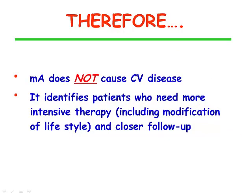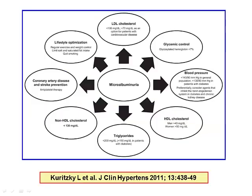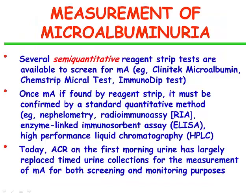Microalbuminuria does not cause cardiovascular disease; it just identifies patients who need more intensive therapy, including modification of lifestyle and closer follow-up. How can microalbuminuria be identified and measured? There are several semi-quantitative reagent strip tests, but once identified, microalbuminuria must be confirmed by quantitative methods such as nephelometry, radioimmunoassay, ELISA methods, and HPLC methods. Today, ACR on the first morning urine has largely replaced timed urine collections for the measurement of microalbuminuria for both screening and monitoring purposes.